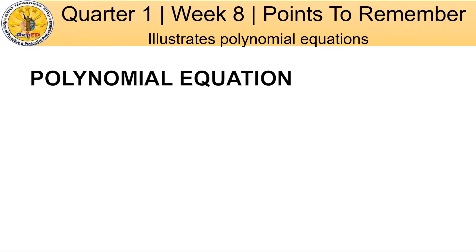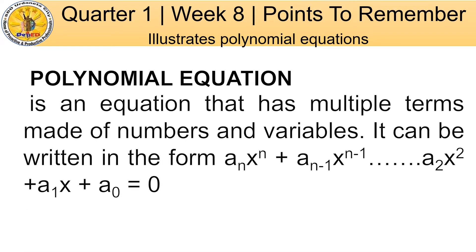First, what is a Polynomial Equation? A Polynomial Equation is an equation that has multiple terms made of numbers and variables. It can be written in the form: aₙxⁿ + aₙ₋₁xⁿ⁻¹ + ... + a₂x² + a₁x + a₀ = 0.